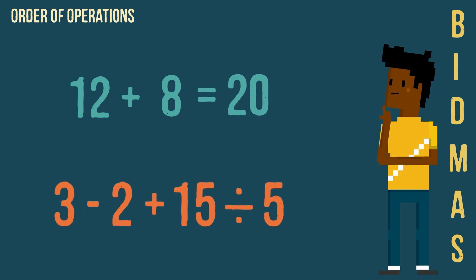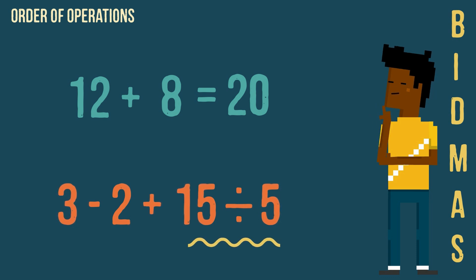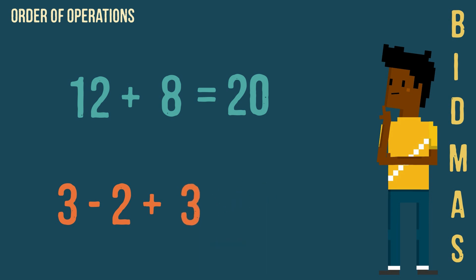In this next example we can see there are no brackets and no indices, but there is a division, so we calculate the division first. We are then left with addition and subtraction. Remember that addition and subtraction share the same importance and so are carried out in the order they appear, from left to right. So here, we would calculate the subtraction first, followed by the addition.